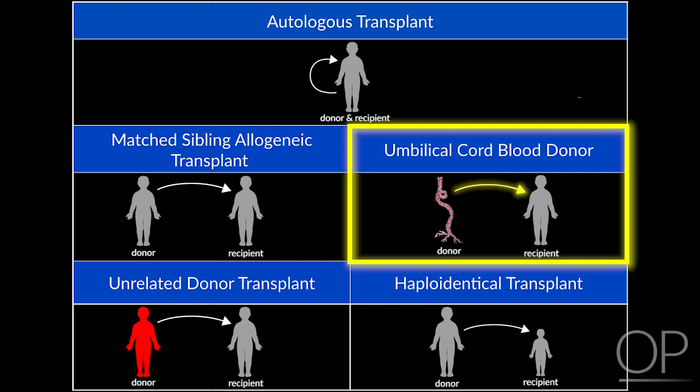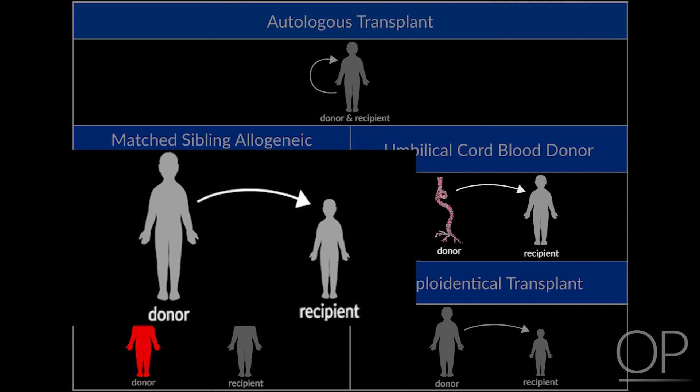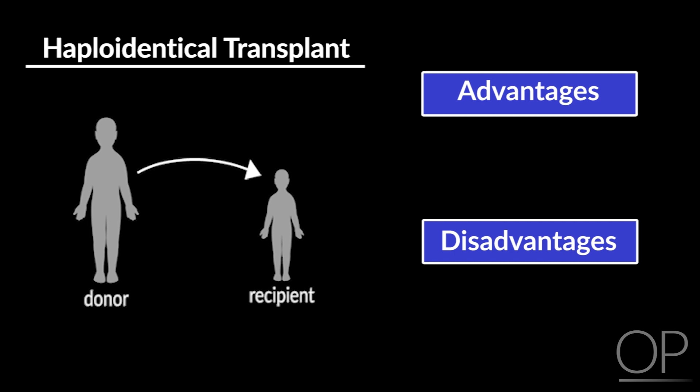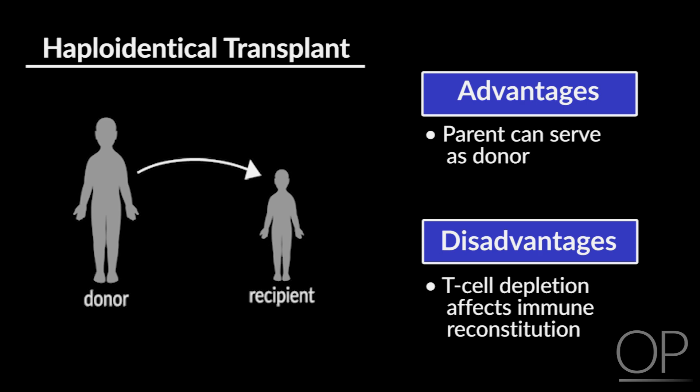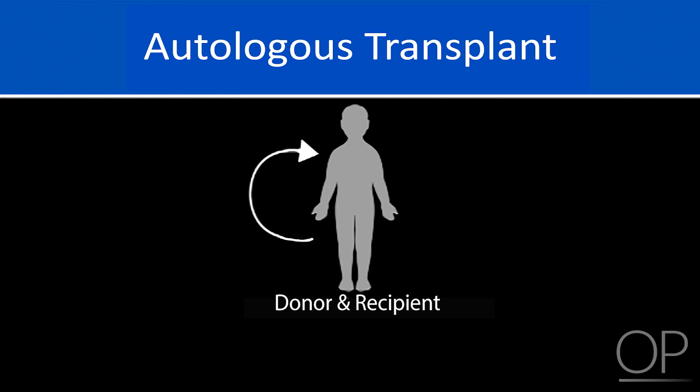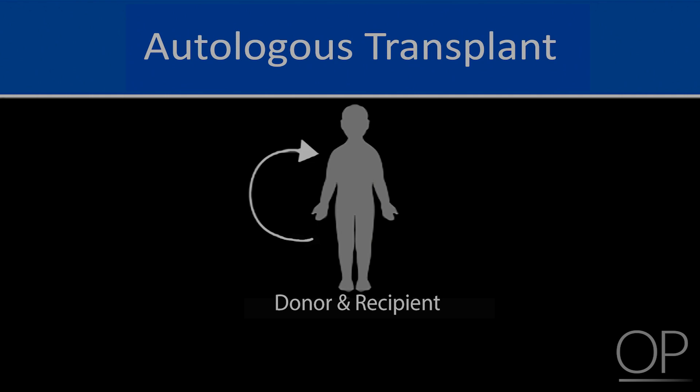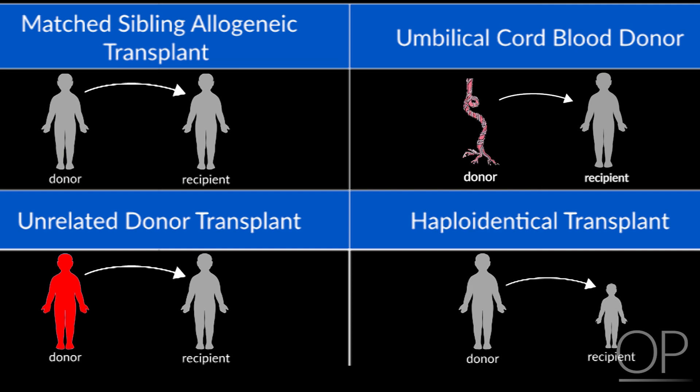There is also umbilical cord blood transplant from an unrelated source, and haploidentical transplant, meaning you use someone who is a half-match. The advantage of haploidentical transplantation is that most children have a donor since a parent can serve as one, but the disadvantage is that T cells in the graft need to be removed, and that T cell depletion profoundly affects immune reconstitution. For matched sibling, unrelated, cord blood, and haploidentical transplants, you identify a different donor who has their own infectious history and immune system function.